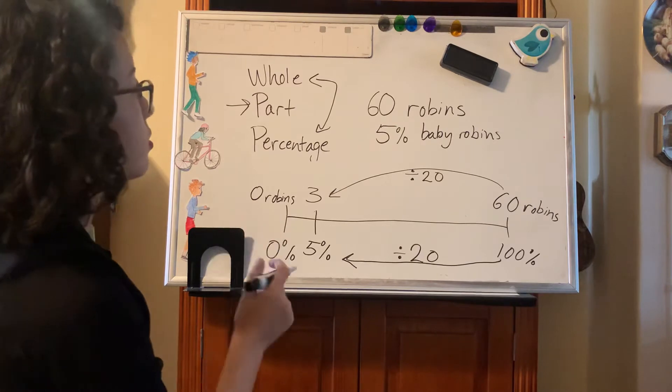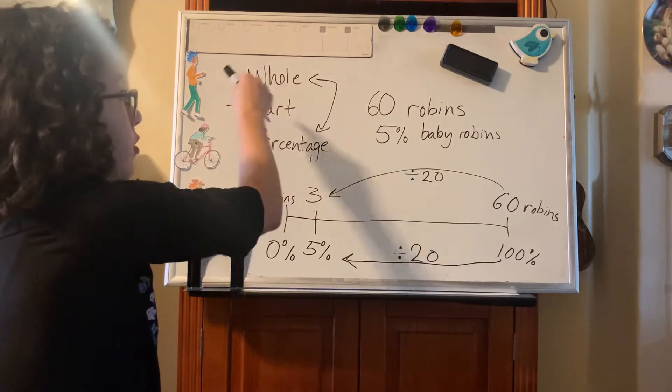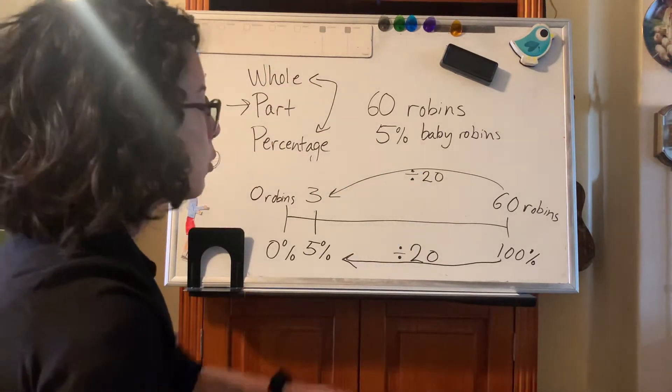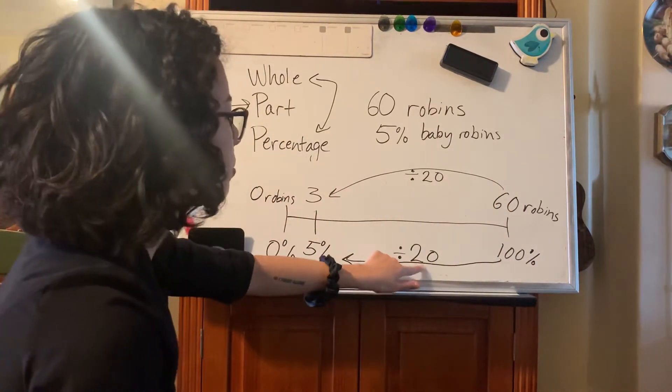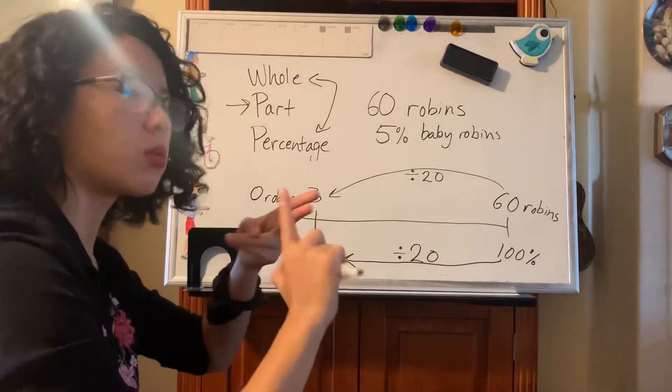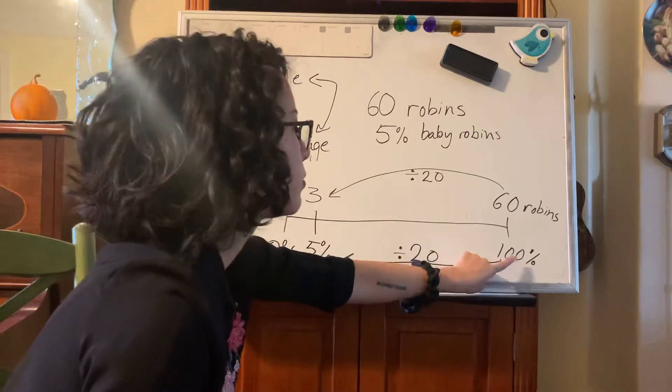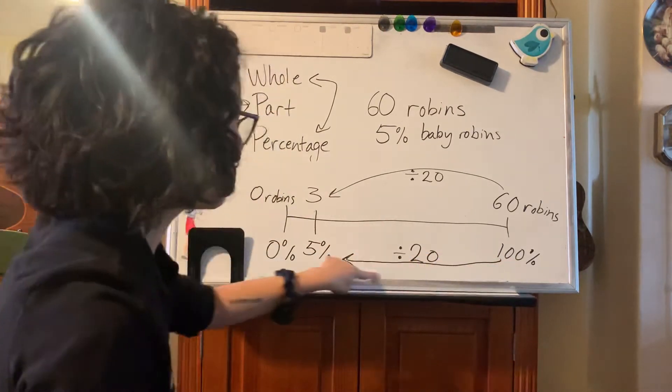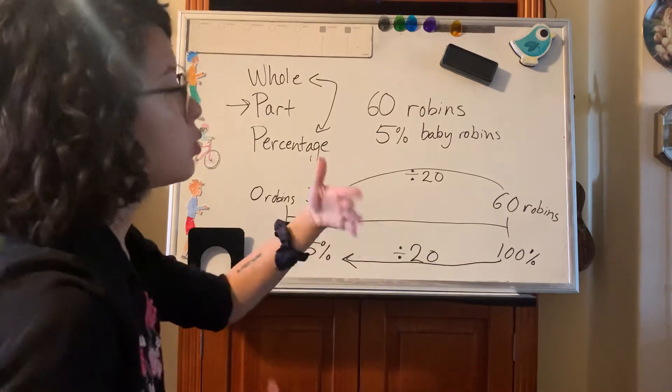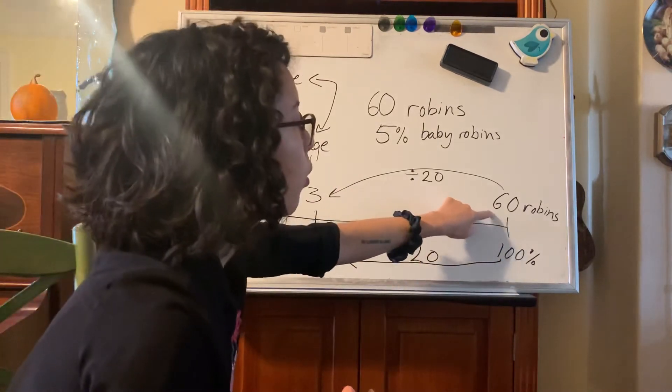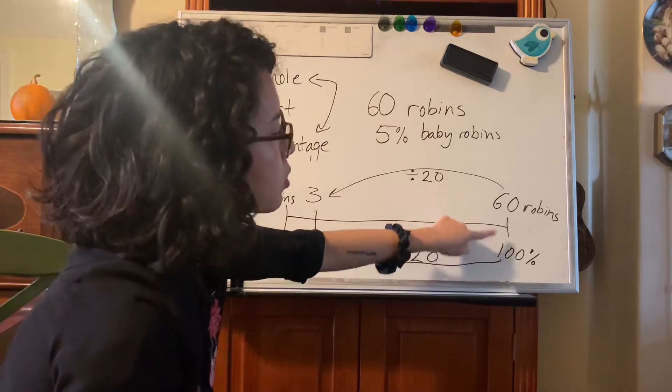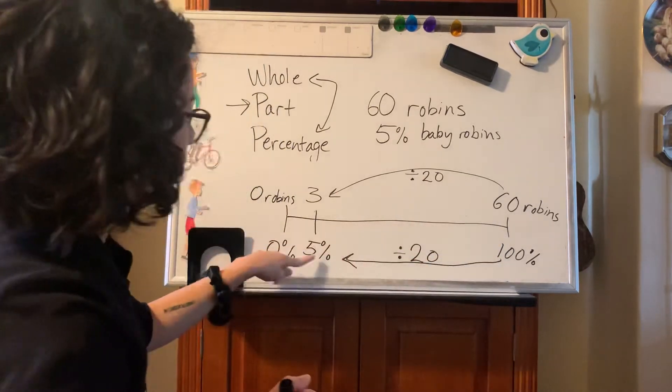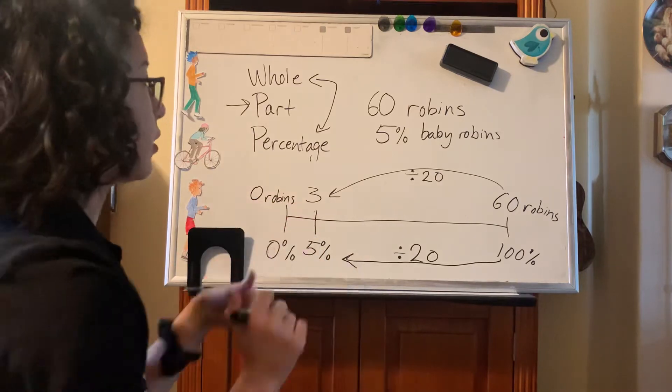Okay, so that's how we do the whole and percentage find the part type of problem. We fill in all of our information on the double number line and then we can use an operation either multiplication or division to get from 100 to wherever the percentage was and then do that same operation to get from the whole to whatever the part was. The 100 always corresponds to the whole and then the percent corresponds with the part that you're trying to find.